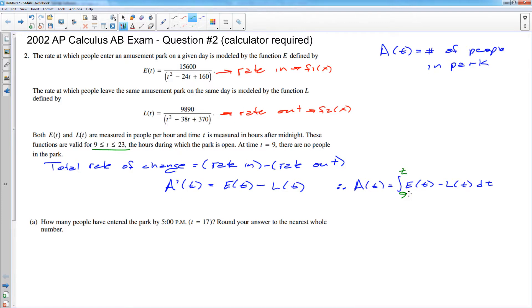But this top value can change depending on what time it is. So it's actually going to be A of T is the area from 9 to T. But then you have a weird conflict of variables, and you are not allowed to have the same variable for the limit of integration as you do for the integrand. And so I will simply change those to X's, or you could use another variable. But that's the function we're going to use for the number of people in the park at any given time.